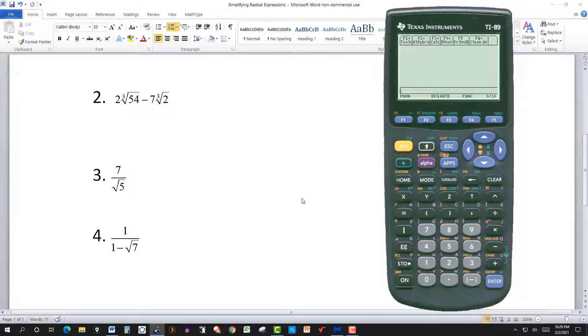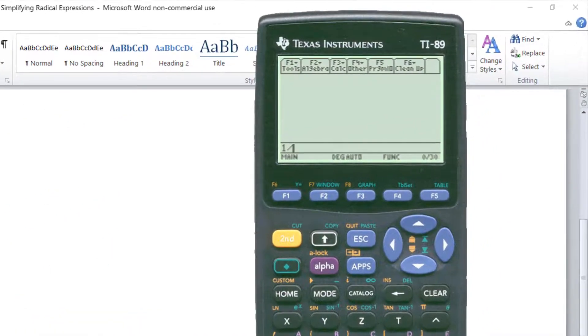Now we got 1 over 1 minus radical 7. Again we got a radical in the denominator. So all I have to do with this calculator is put 1, divide by, then put parentheses here, 1 minus square root of 7, and close parentheses. Hit enter.